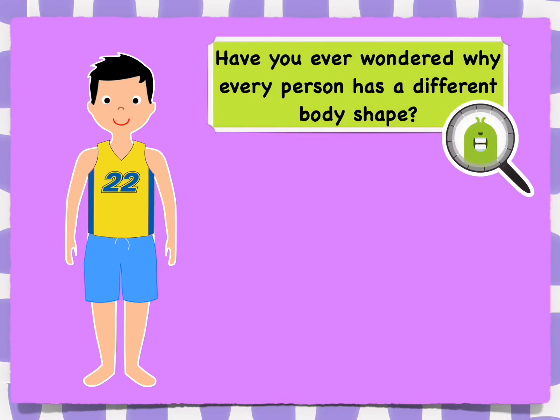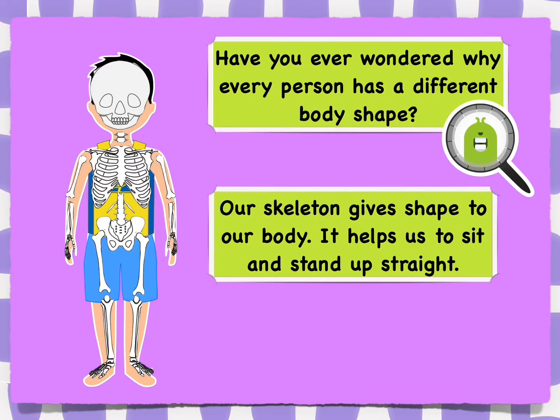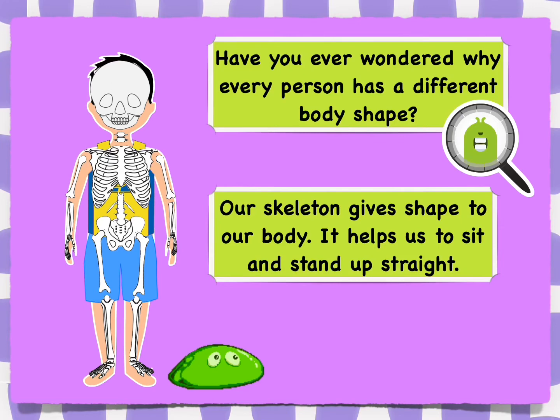Have you ever wondered why every person has a different body shape? Your mom's body shape is definitely different from your dad's, and your body shape is definitely different from your mom's. Our skeleton gives shape to our body and helps us to sit and stand up straight. Without any bones or skeleton, our body would look like a slime, and it would be very hard for us to stand, move, or even sit up straight.